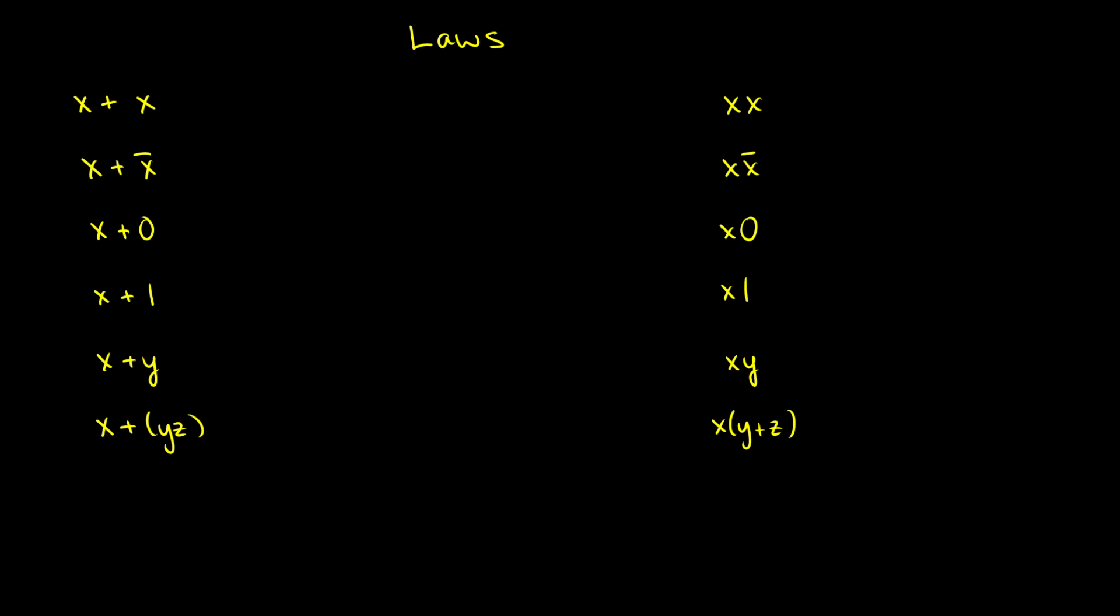The last thing we'll talk about are laws. So what we can do to aid ourselves is think, what does this mean in terms of propositional logic? How does this translation work? For example, X plus X, this is the same thing as saying X or X. When we think about X or X, this is called idempotence. This just gives me X back. So that's what we get in digital logic as well. We take X or X, we get X.